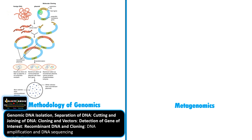The basic methodology of genomics begins with genomic DNA isolation. The DNA is then separated using gel electrophoresis, cut using restriction enzymes, and joined using ligases. This is followed by cloning that DNA into a suitable vector to replicate inside a host.